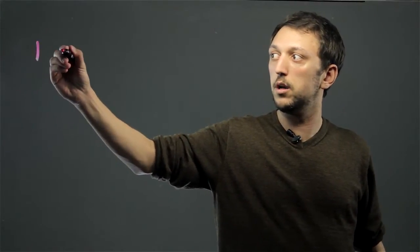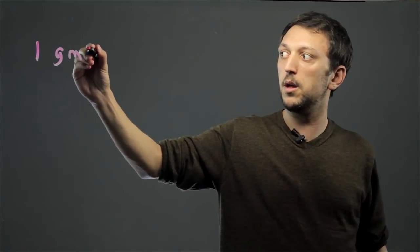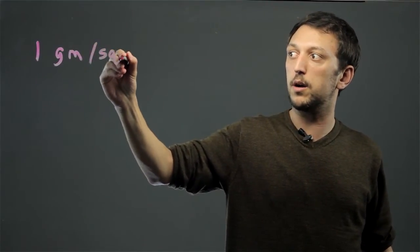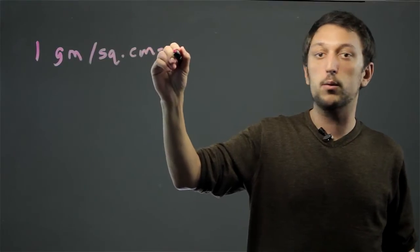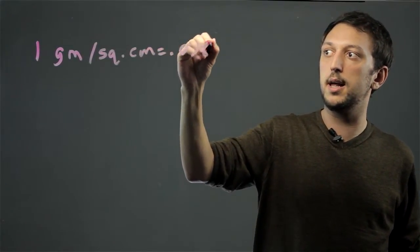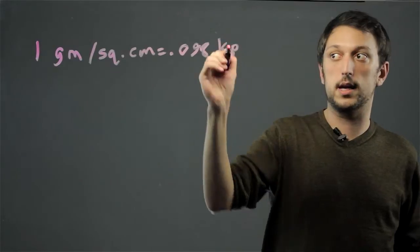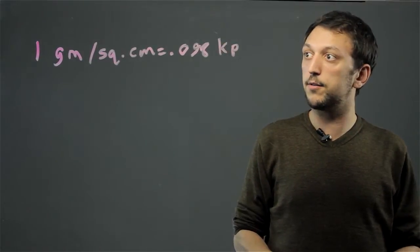A kilopascal is 1,000 pascals. So, the conversion is 1 gram per square centimeter equals 0.098 kilopascals. And that's very simple.